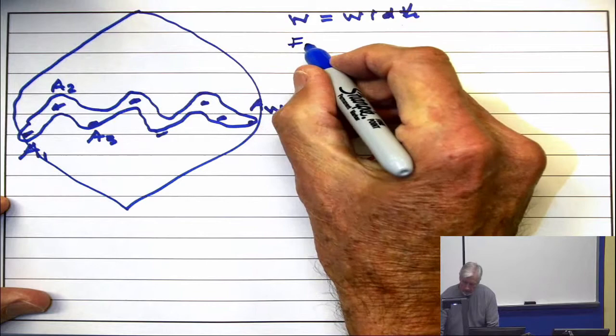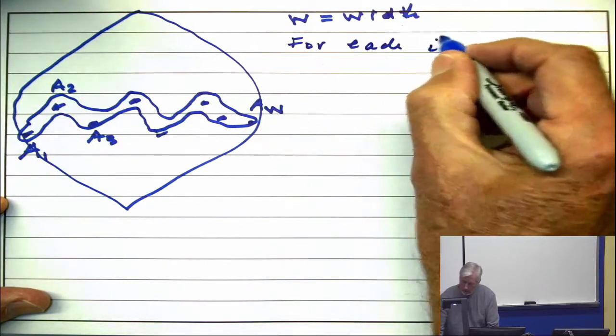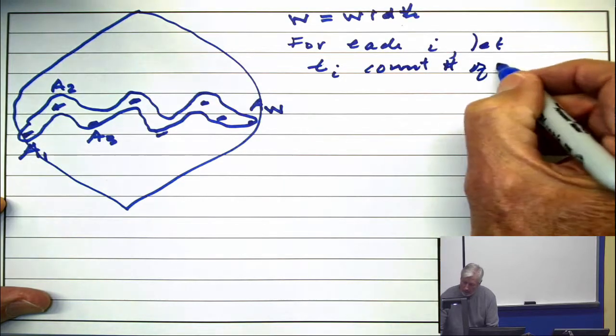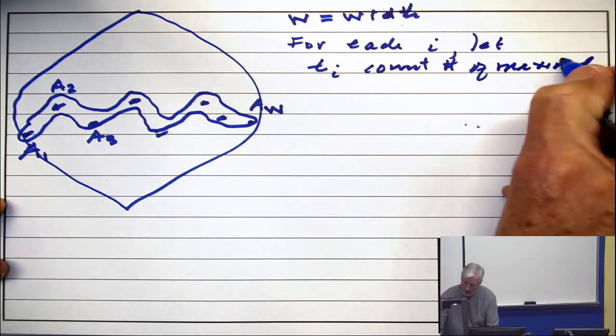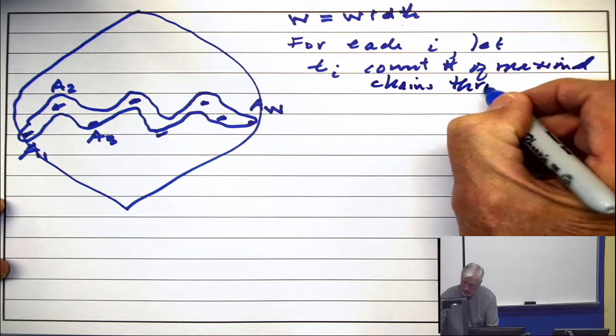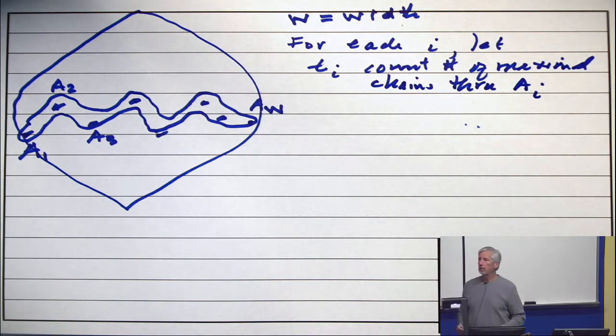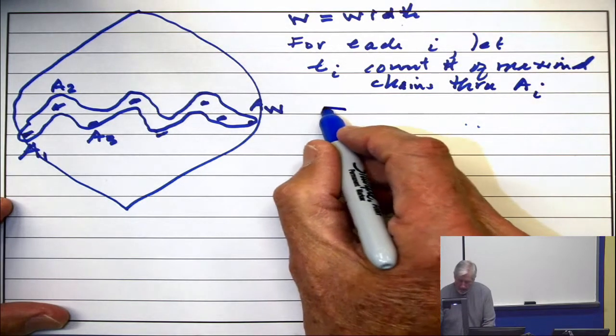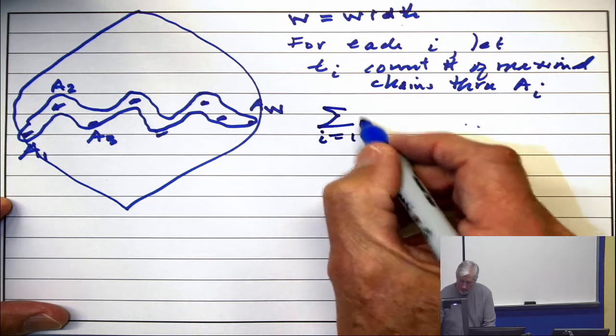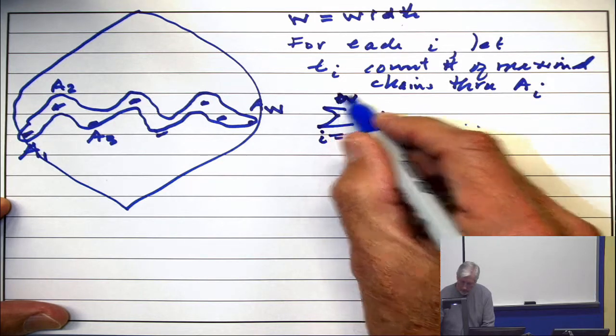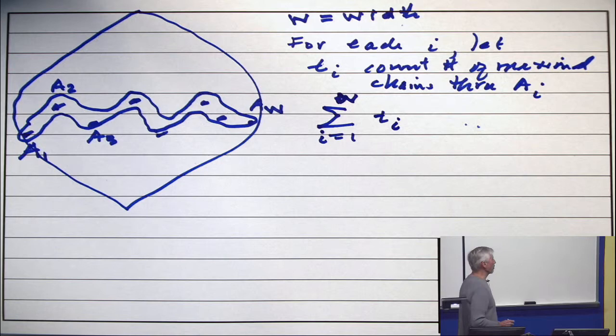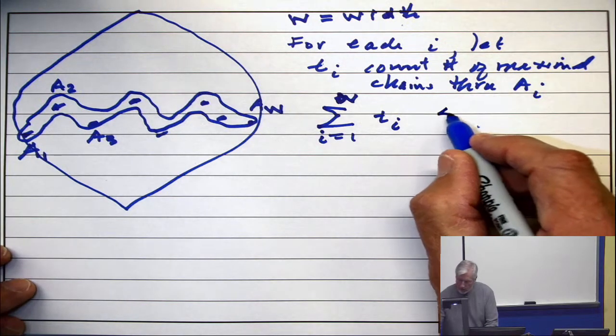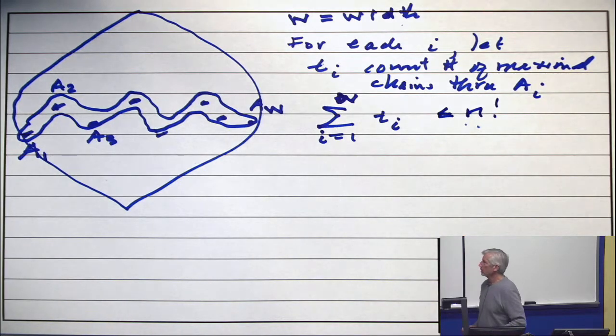For each i, let T sub i count the number of maximal chains passing through the set A sub i. Just count them. Now, add them up. Add up the numbers T sub i for i equals 1 to W. I claim that's at most n factorial.